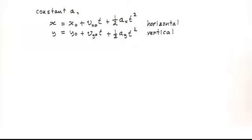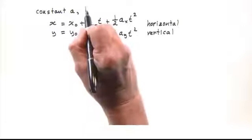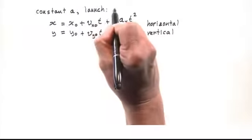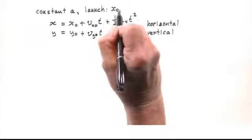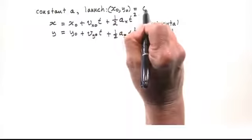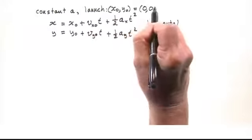Let's start with our general equations for constant acceleration. As usual, we neglect air resistance and set Ax equals 0. Let's also make the projectile start from the origin, so we have x0 equals 0 and y0 equals 0.